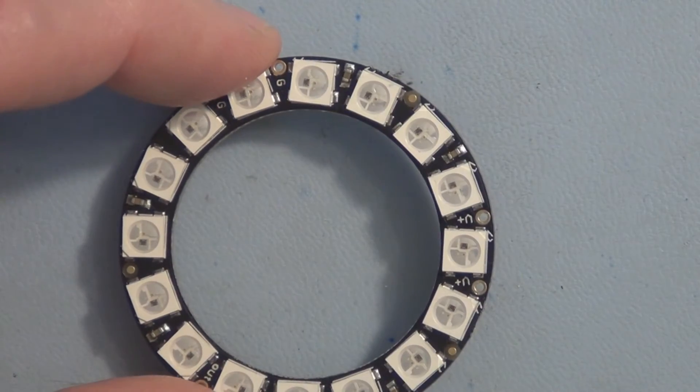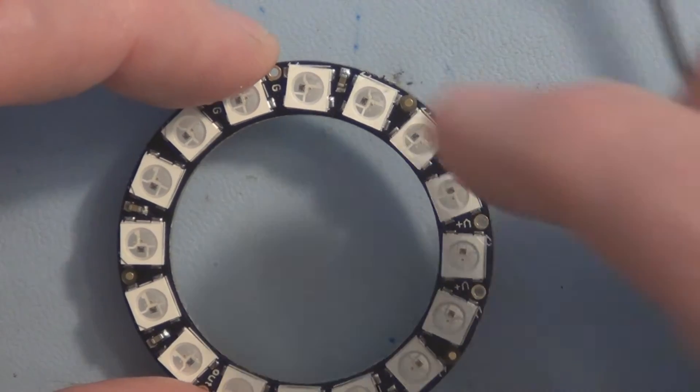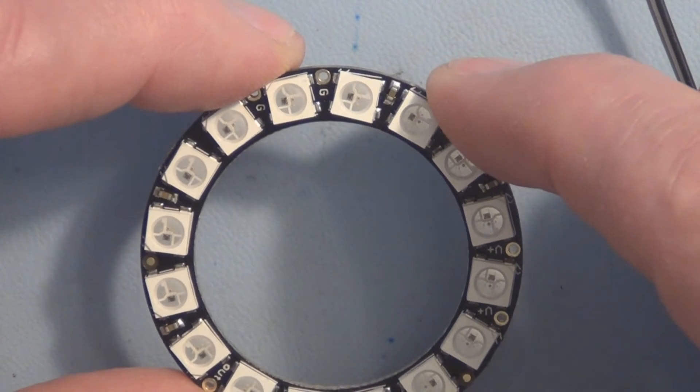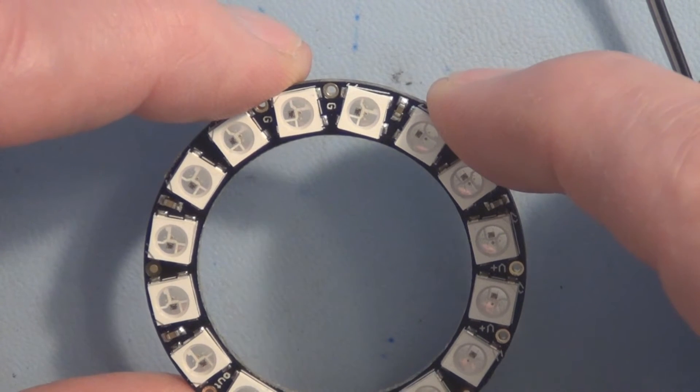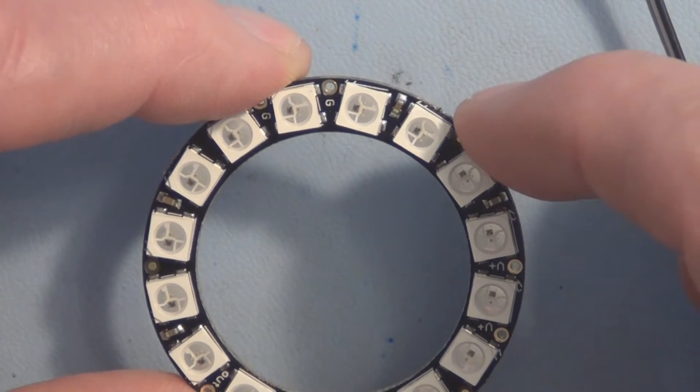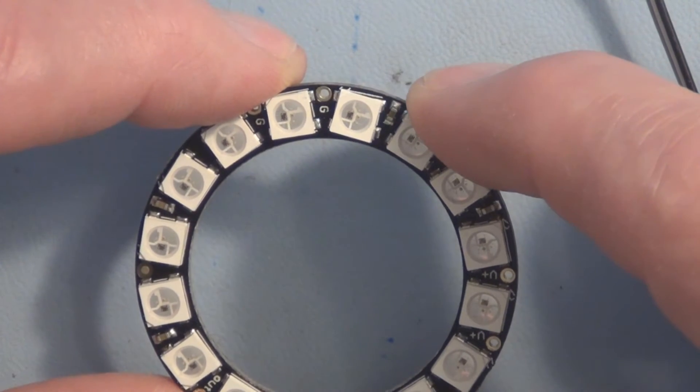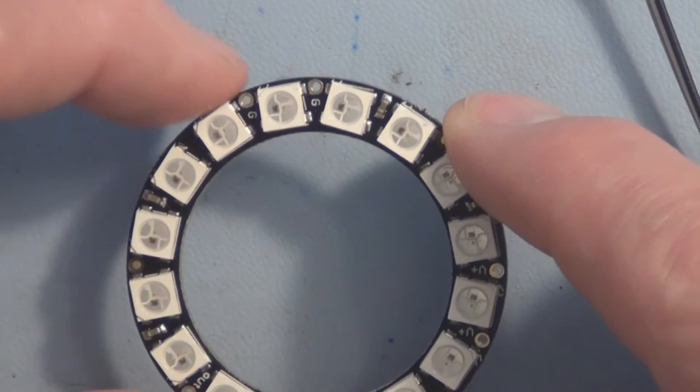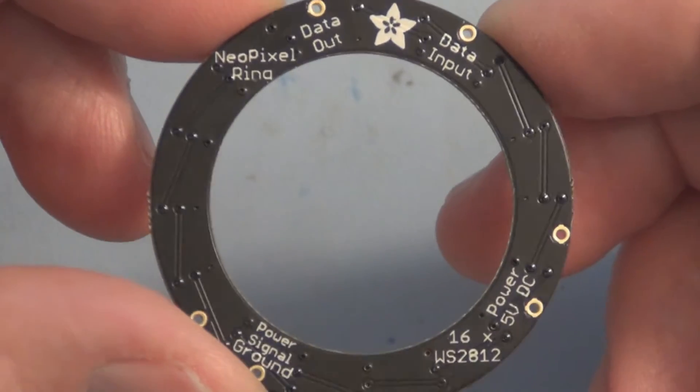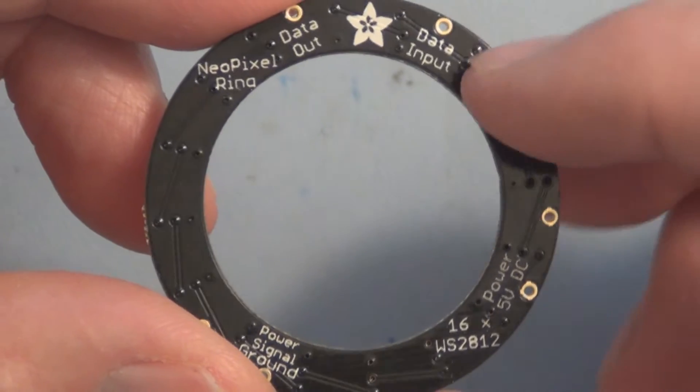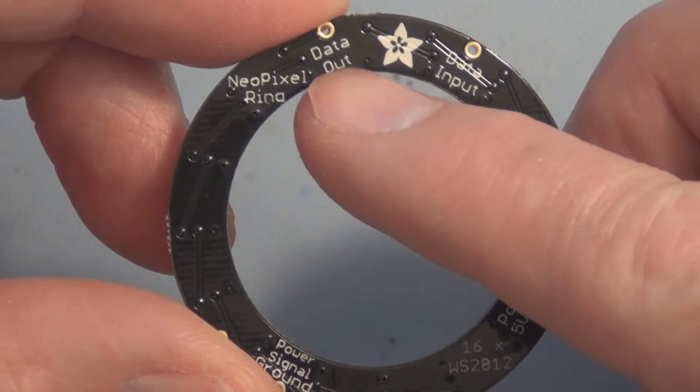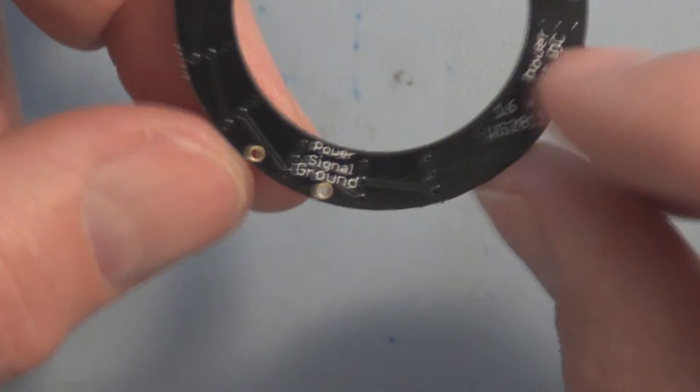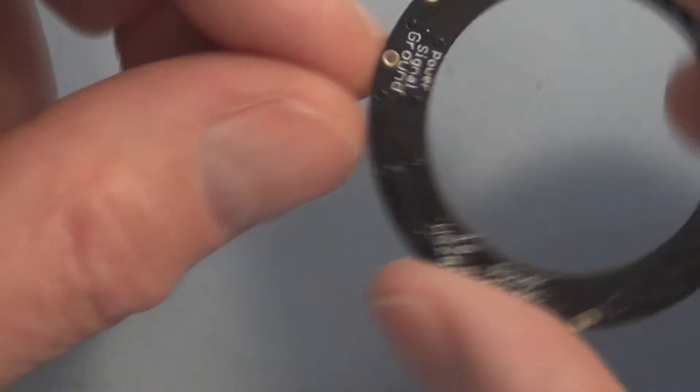So now I can go ahead and start wiring these Neo pixel rings. They have a V plus, ground, and an in and out data in and out. One will be out and that will feed the input to the next Neo pixel ring. You can see more clearly on the back here is the data input and a data output, five volts, and the ground.